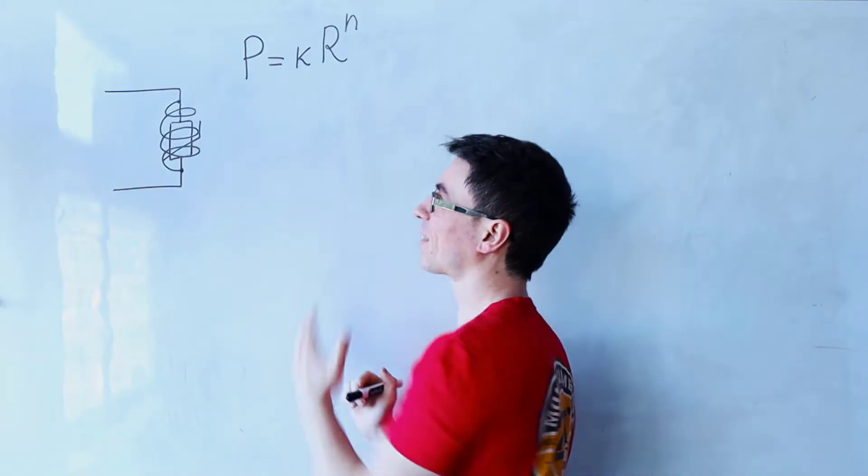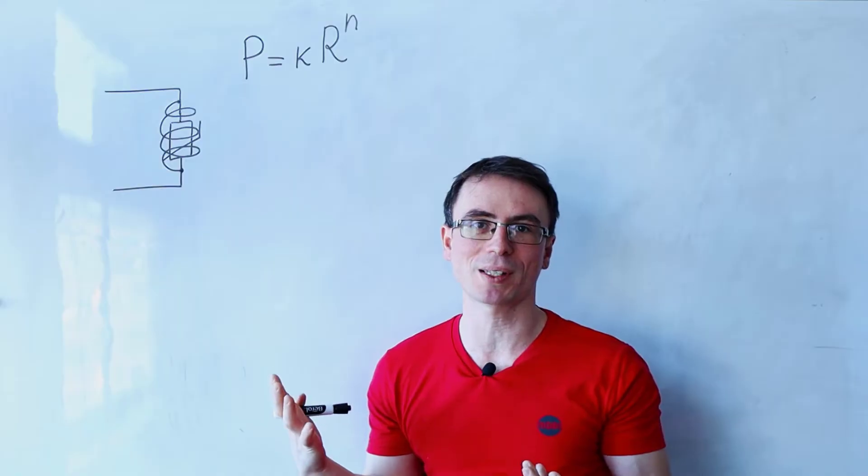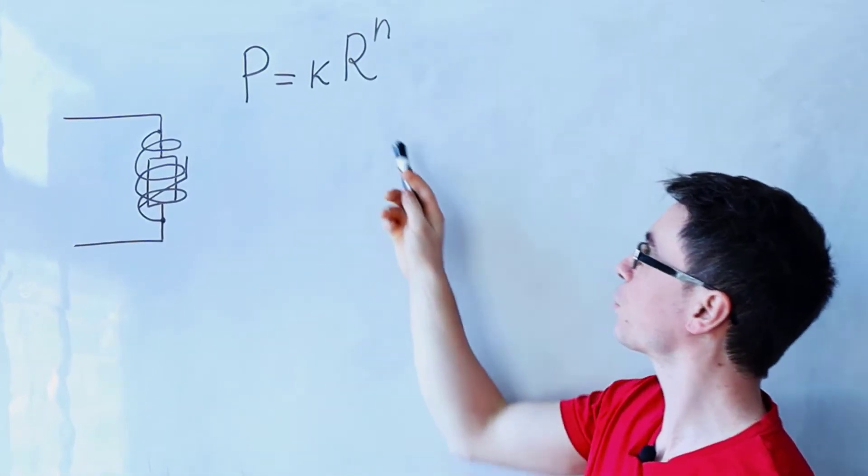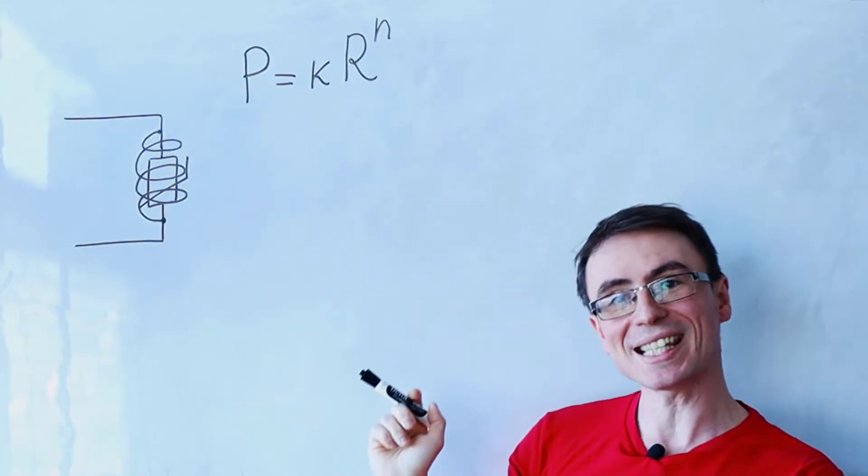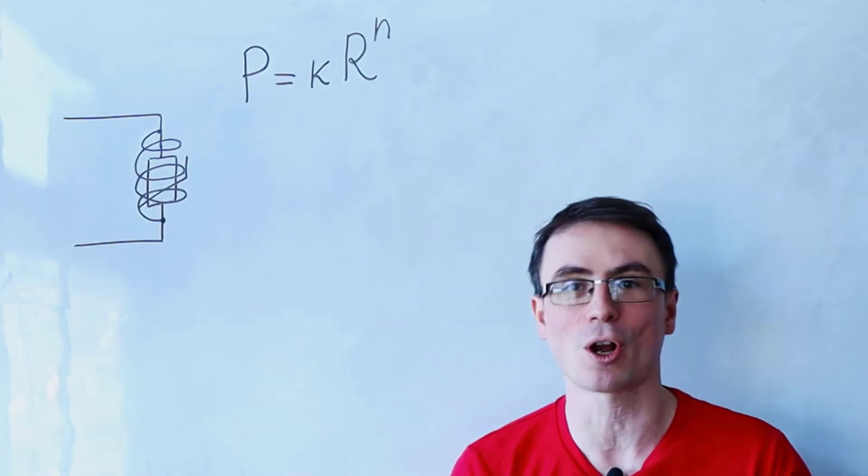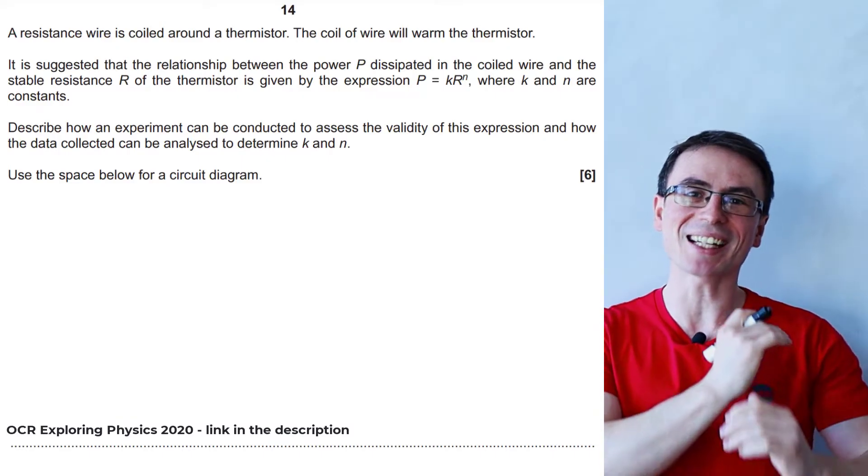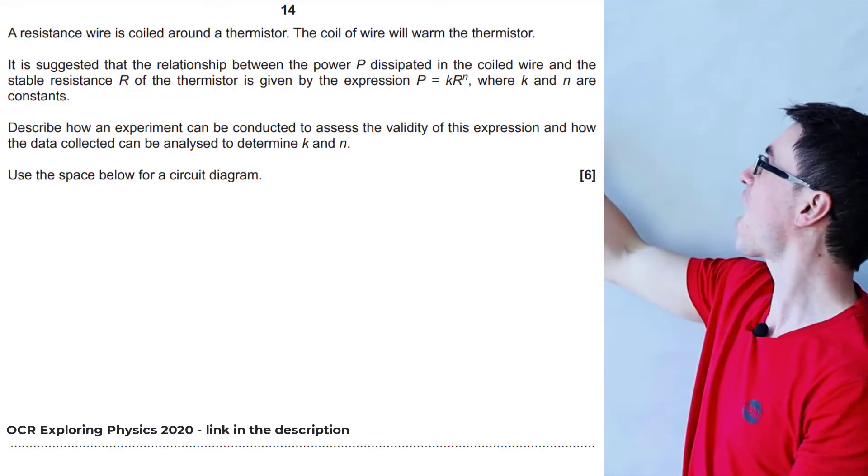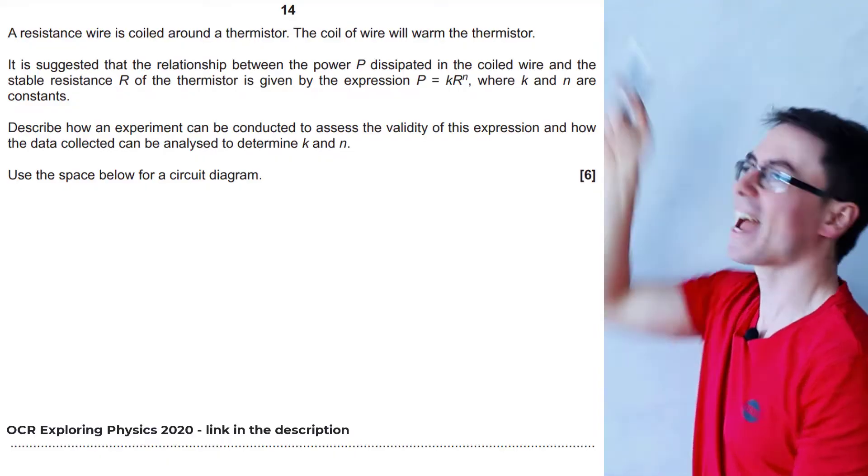The coil will heat the thermistor up and change its resistance. It has been suggested that the power in the coil is related to the resistance in the thermistor via this relationship where k and n are constants, and we need to design an experiment to test the validity of this relationship and find the values of k and n.